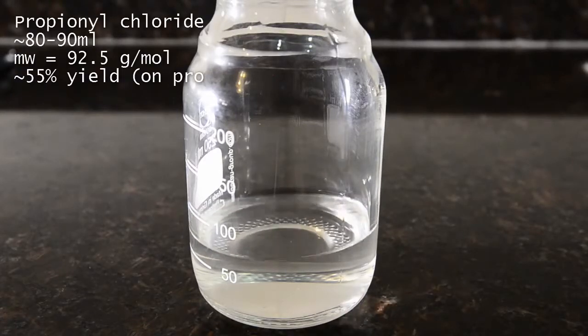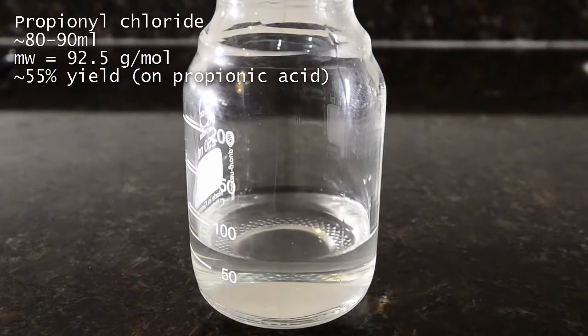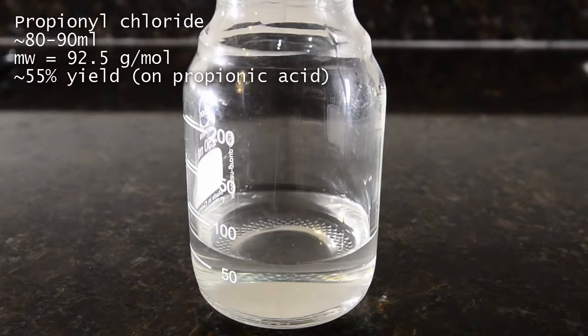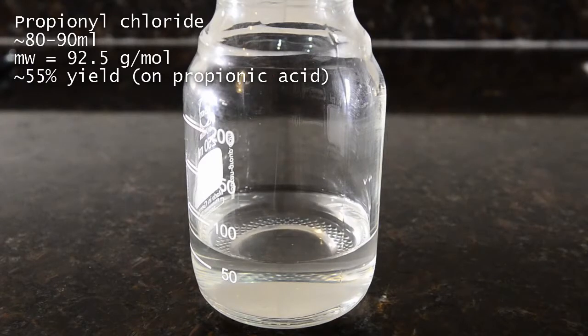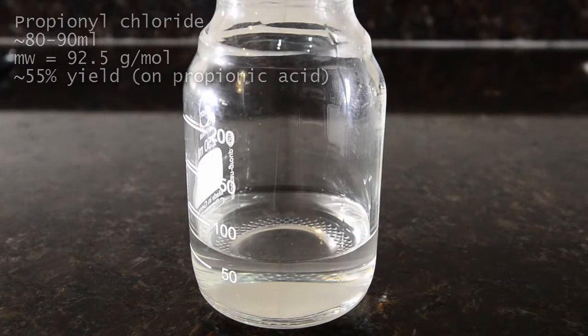Here's our product, around 90 ml of propionyl chloride. This is around a 55% yield, which should be higher but we think our current batch of propionic acid does contain some impurities which lower this.